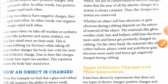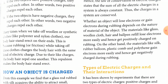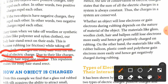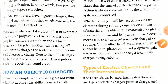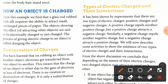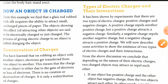When we take off woolen or synthetic clothes like polyester and nylon, our body hairs stand erect at their ends. This is because rubbing or friction while taking off these clothes charges the body hairs with the same kind of electric charge. Due to like charges, the hairs repel one another, making them stand erect. We will now discuss how an object is charged.